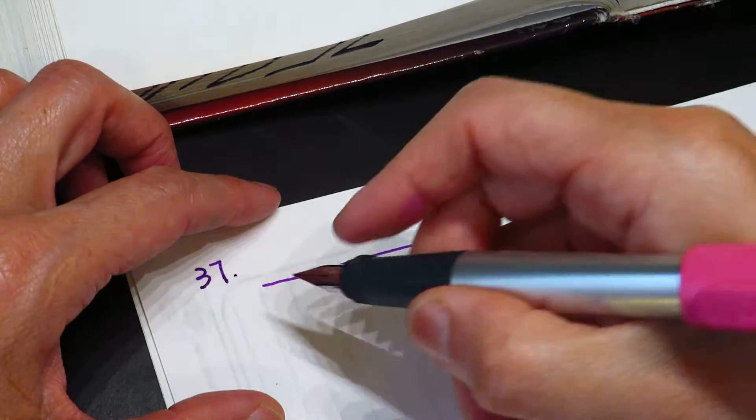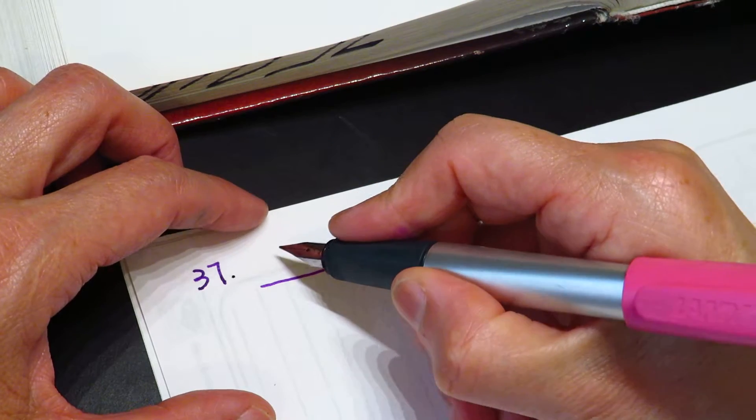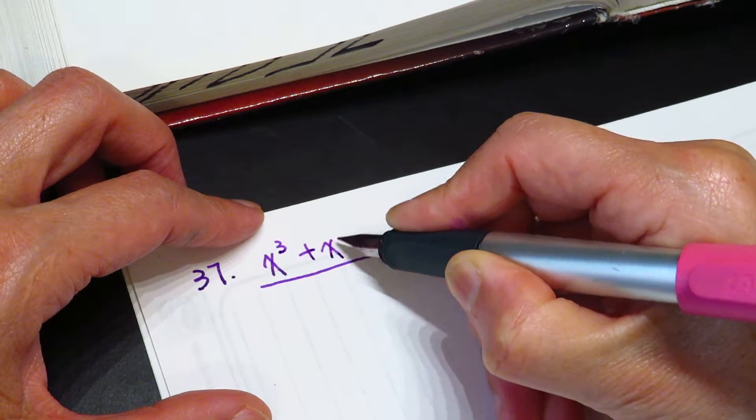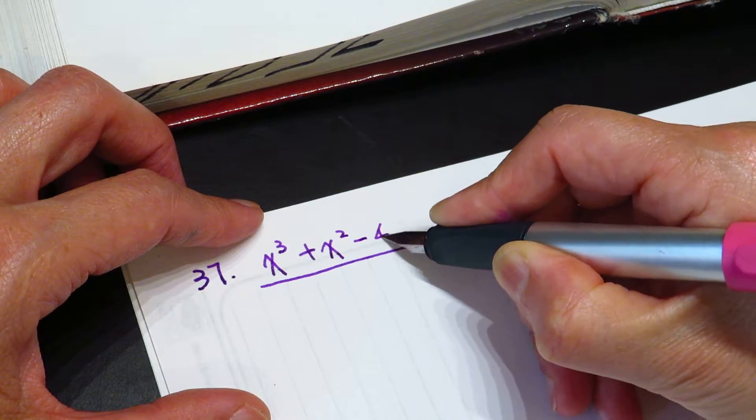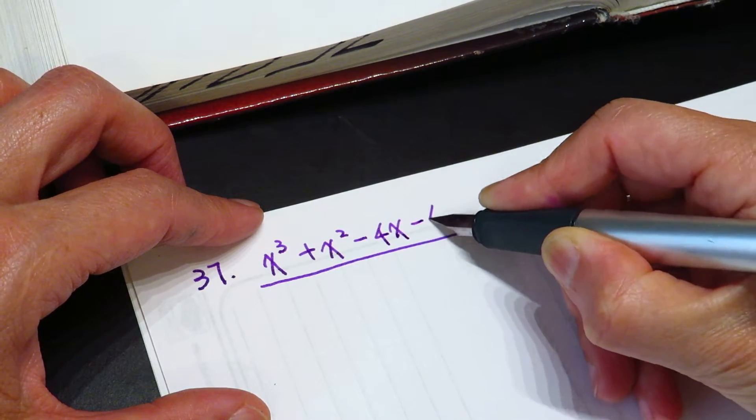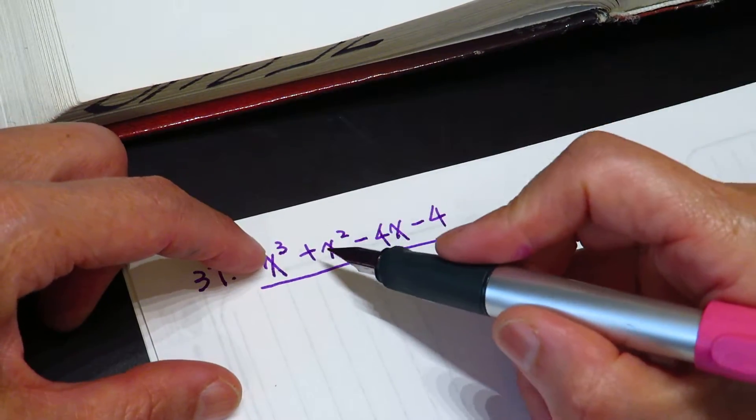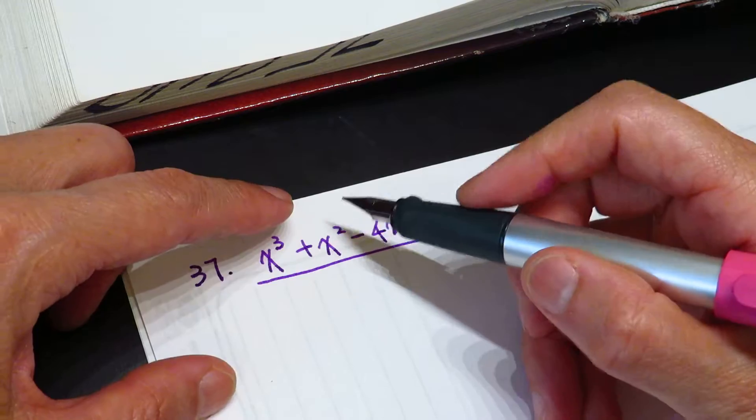Okay, no talking. x to the power of 3 plus x square minus 4x minus 4. Okay, I already see the pattern. This one we can factor. We can take x plus 1 out.